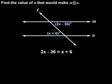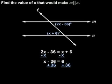Solving from here, we subtract x from both sides to get x minus 36 equals 6. Then add 36 to both sides to get x equals 42.